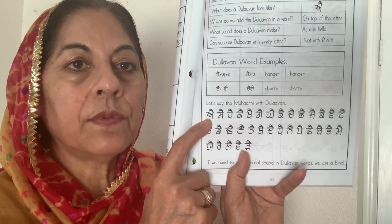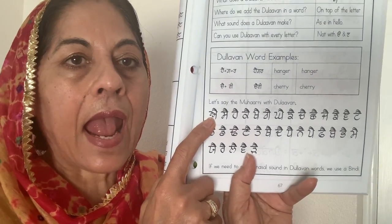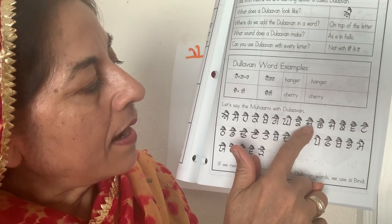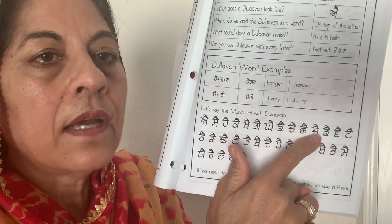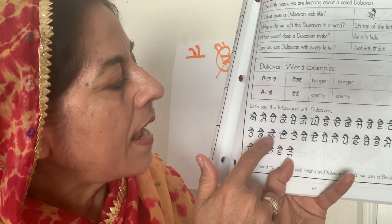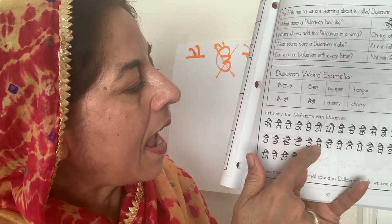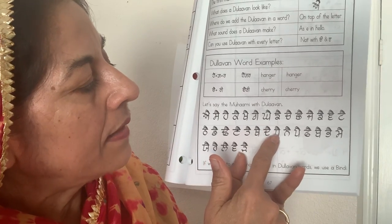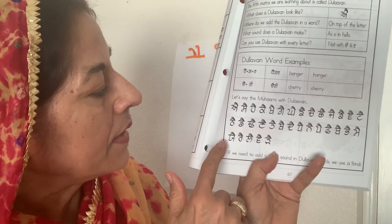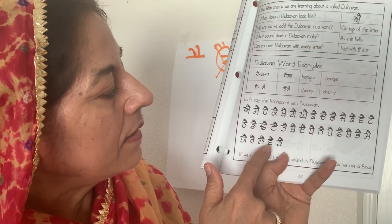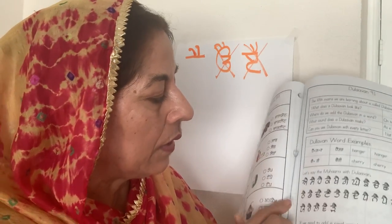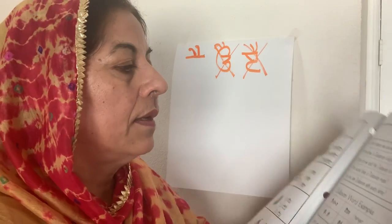The matra sound for Dulaama is 'A.' For the Moharni, we say each letter sound followed by 'A': Sa, Ha, Qa, Ga, Qa, Na, Ta... and continuing through the alphabet. Make sure you say the Moharni at least two or three times with every matra so that you will know the sounds of the matra — the Dulaama.